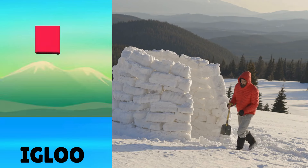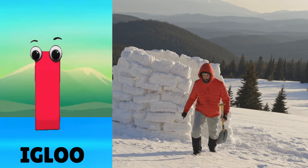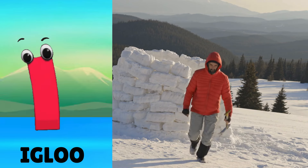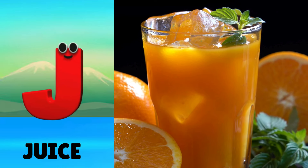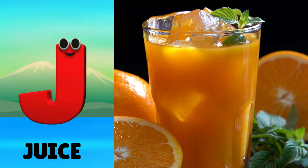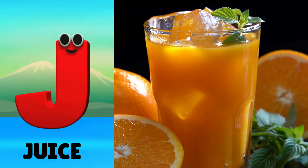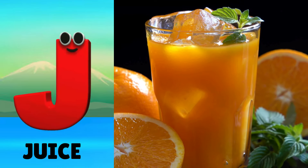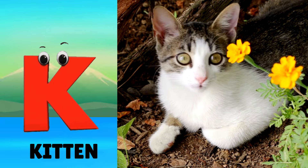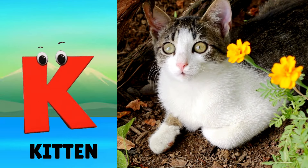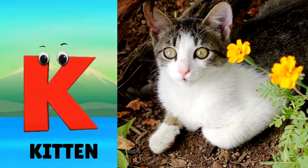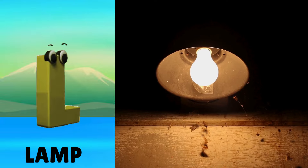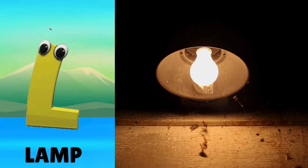I is for Igloo. I, I. Igloo. J is for Juice. J, J. Juice. K is for Kitten. K, K. Kitten. L is for Lamb. L, L. Lamb.